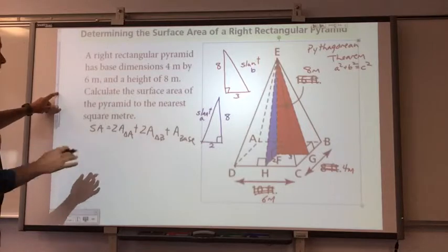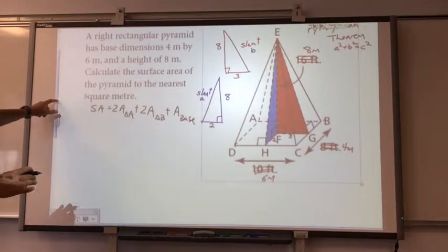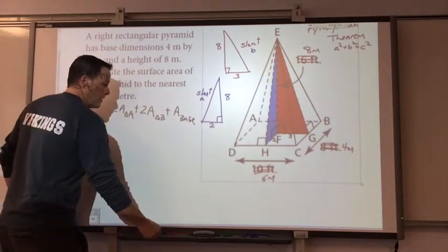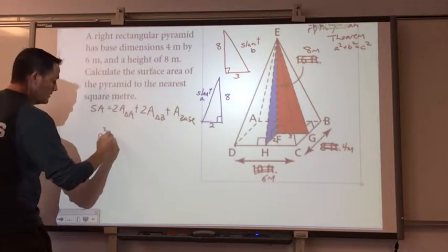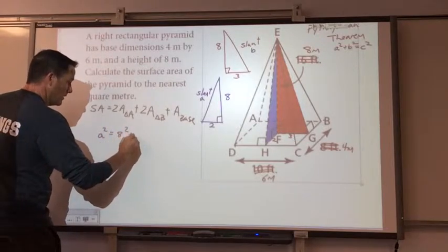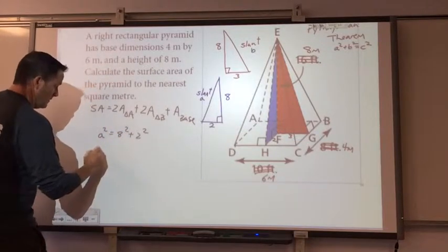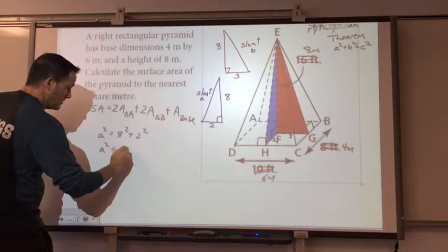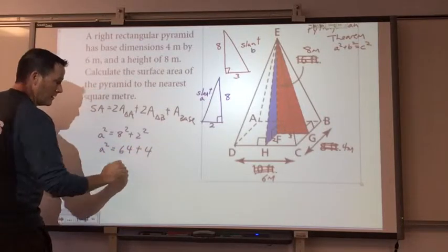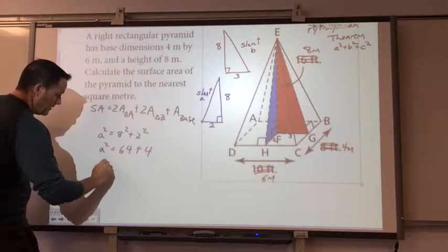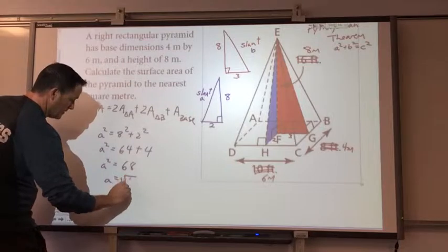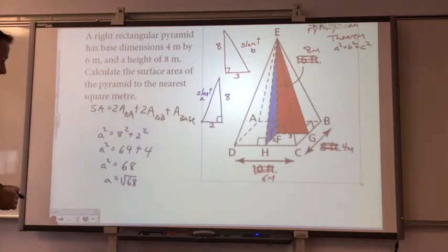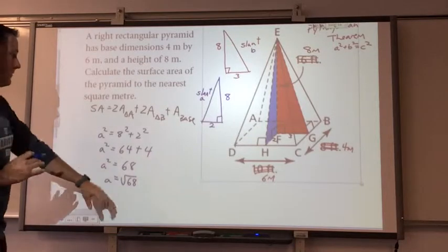But before we get to that, we have to get our slant heights. So, the purple slant height, little a, we'll call it little a squared, is going to be equal to 8 squared plus 2 squared. So, A squared equals 64 plus 4, A squared equals 68, or A equals square root 68. And we'll leave it there. That's it. We won't worry about anything else yet. We're just going to leave it at the square root of 68.